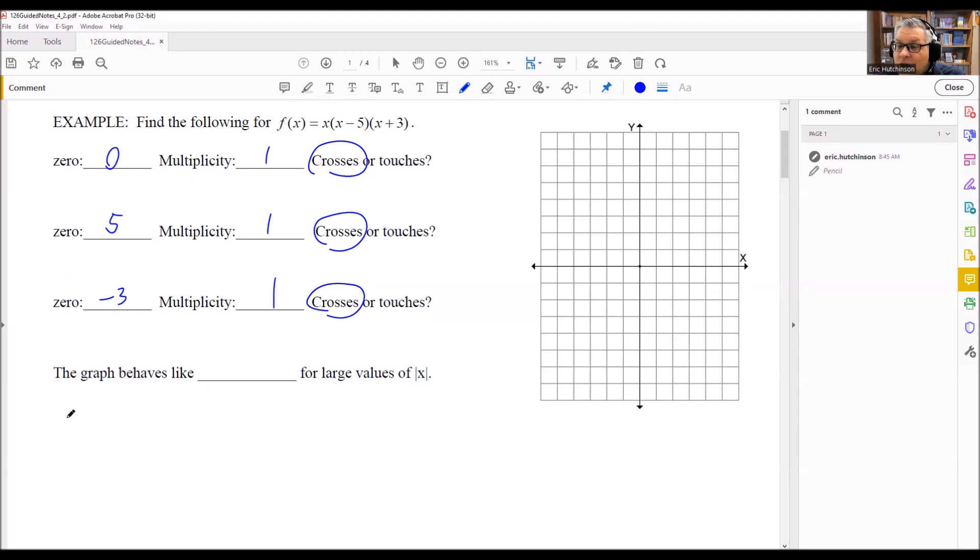Now for this one, I'm going to multiply it out. But for future ones, future examples, we don't have to do this. But for this example, I will. So first of all, I'm going to multiply the last two terms here.